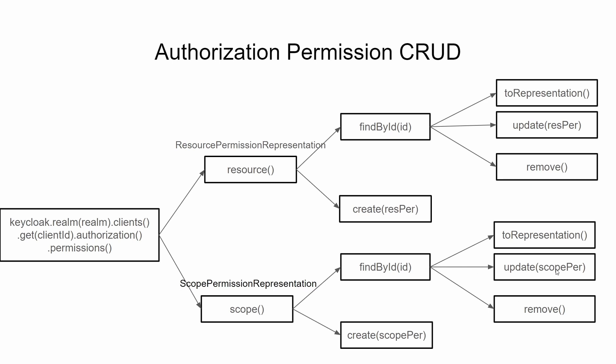So this is a general idea of how we can find out the method calls within the Keycloak object so that a specific REST API for our CRUD operation can be invoked. That's it for this video. Thanks for watching.